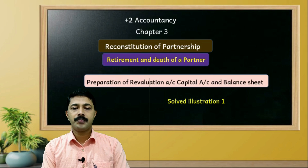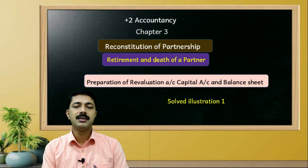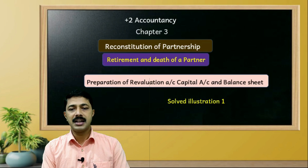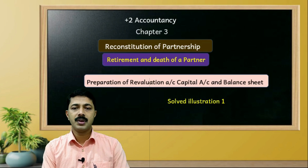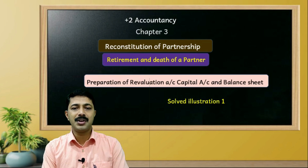Dear students, Reconstitution of Partnership — Retirement and Death of a Partner. In this chapter, we are going to work through problems. In the next class, we will cover individual adjustments, for example treatment of goodwill and revaluation of assets and liabilities.